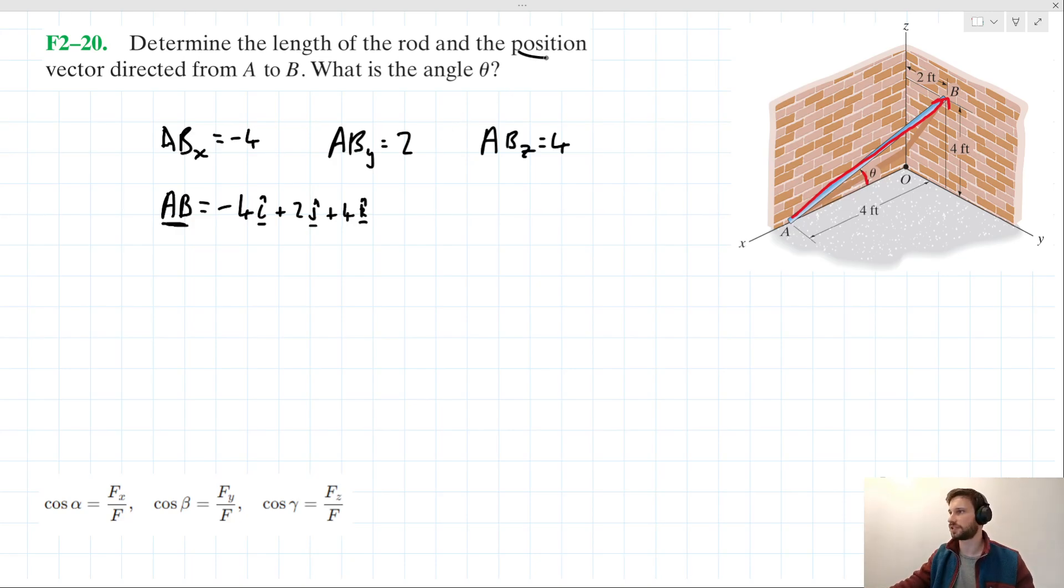Well, that's this position vector idea sorted. What about the length of the rod? Well, we can just use Pythagoras theorem here. We can say that the magnitude of A, B is equal to four squared plus two squared plus four squared. And when we bring this in our calculator, this gives us a value of six. Well, that's the length of the rod sorted.